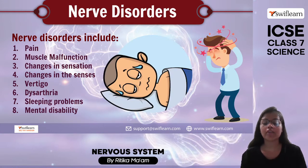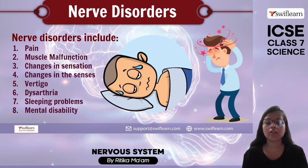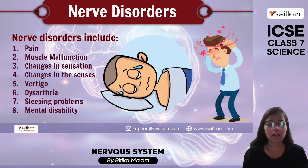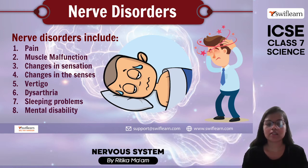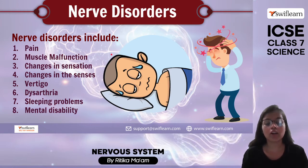Now talking about nerve disorders — sometimes we experience discomfort because of nerve disorders. These include pain in our nerves, muscle malfunction, changes in sensation, changes in the senses, vertigo, dysphoria, sleeping problems, and mental disabilities. These are all nerve disorders which occur due to the dysfunctioning of our nervous system.